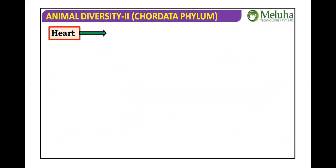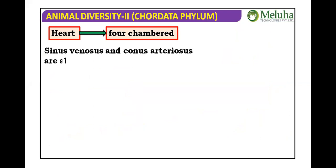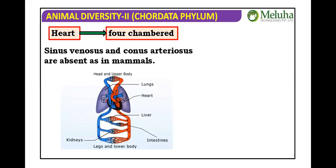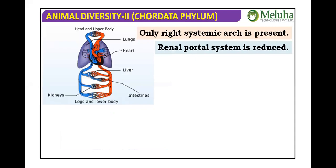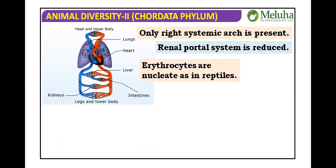The heart is four-chambered, as in crocodilians. Sinus venosus and conus arteriosus are both absent, as in mammals. However, unlike mammals which have a left systemic arch, birds have a right systemic arch. So in birds the left systemic arch is absent, while in mammals the right systemic arch is absent.